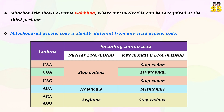UAA, UGA, and UAG are read as stop codons in nuclear DNA, whereas UGA encodes tryptophan in mitochondrial DNA. AUA encodes methionine in mitochondrial DNA instead of isoleucine as in nuclear DNA. In addition, mitochondrial DNA uses AGA and AGG as stop codons instead of encoding arginine as in nuclear DNA.